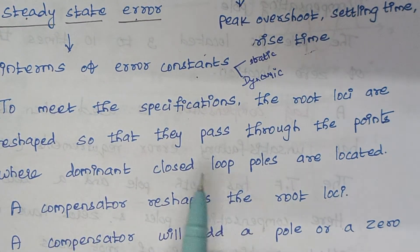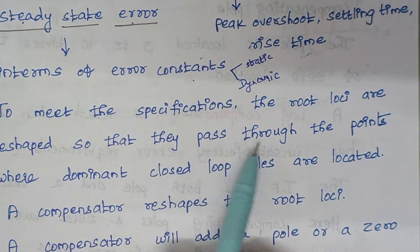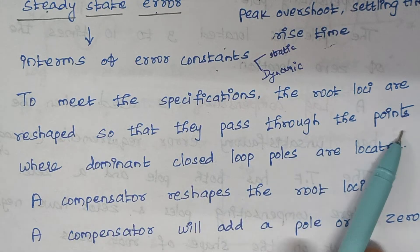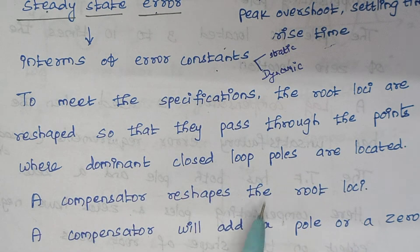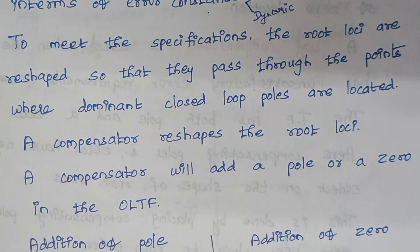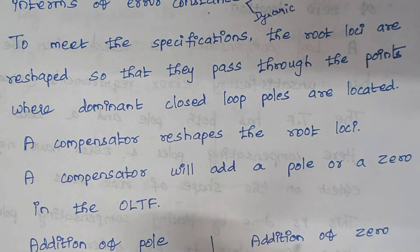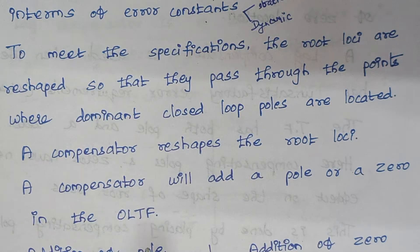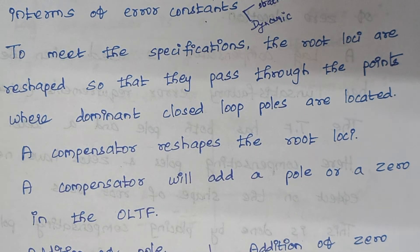To meet the design specifications, the root loci are reshaped so that they pass through the points where the dominant closed-loop poles are located. To achieve this, we place a compensator. A compensator reshapes the root locus by modifying its shape, and it adds a pole or a zero in the open-loop transfer function. A compensator is a device which makes the system produce the desired output, and it may have a pole, a zero, or both.